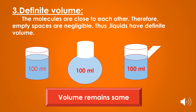Third postulate: definite volume. The molecules are close to each other, so empty spaces are negligible — thus liquids have definite volume. To demonstrate, pour 100 ml of water in a glass, then transfer it to a round bottom flask — the volume remains 100 ml. Transfer it again to a jug — the volume is still 100 ml. There is no change in volume; it's fixed. This means liquids have a definite volume.